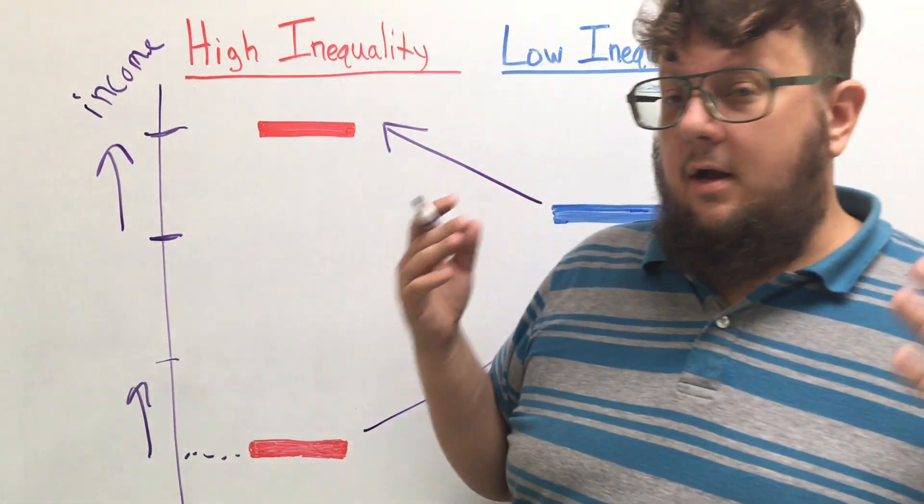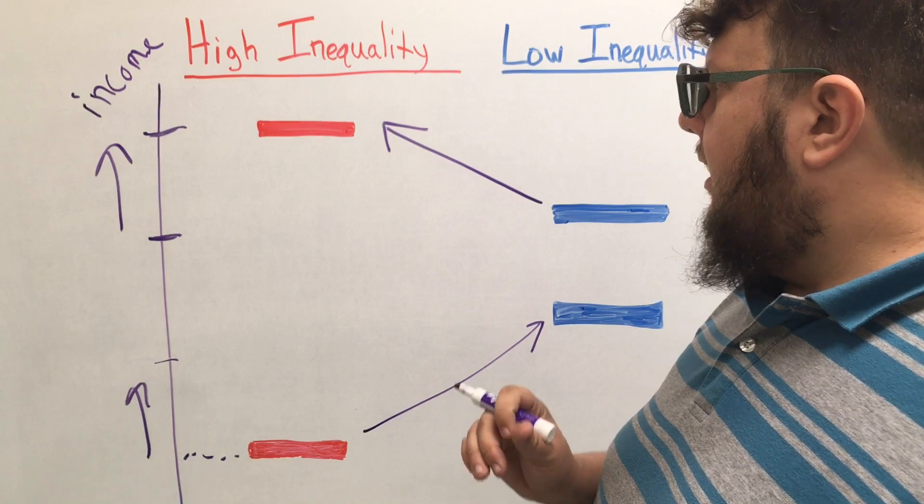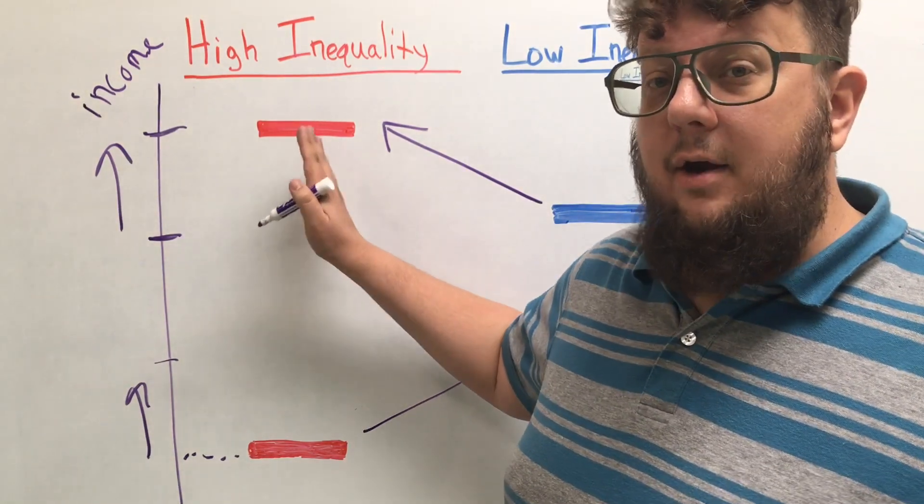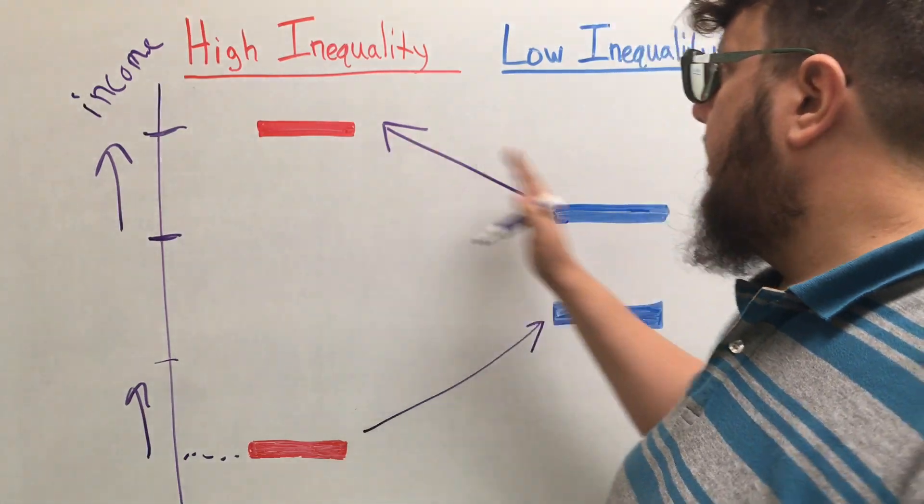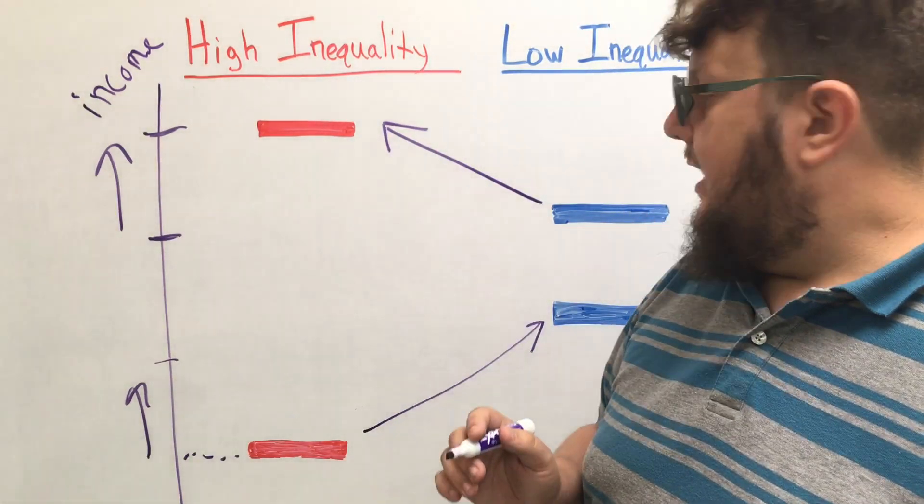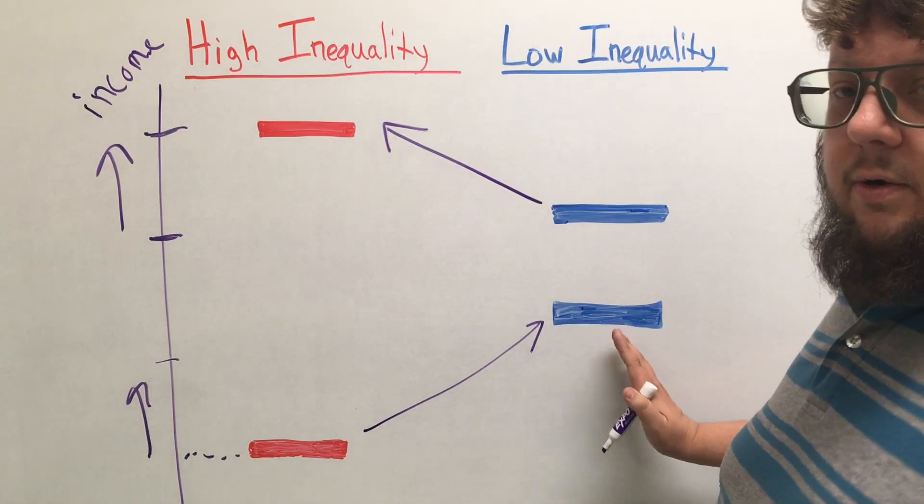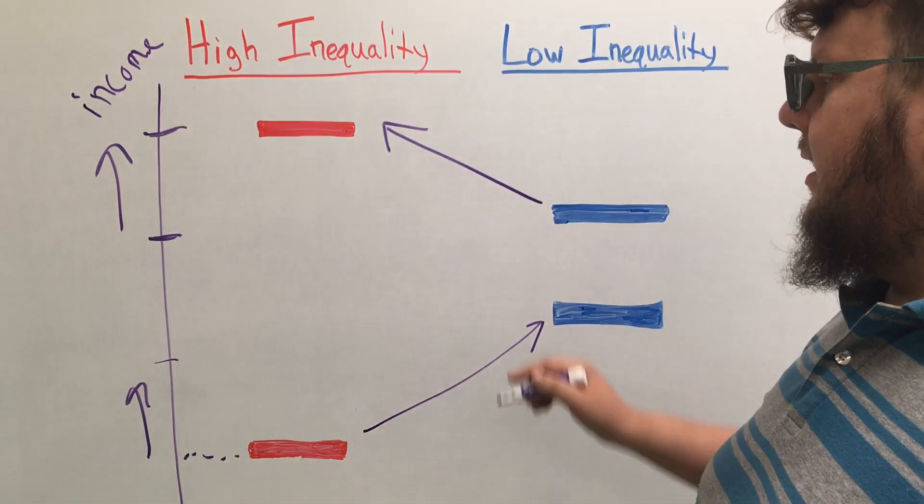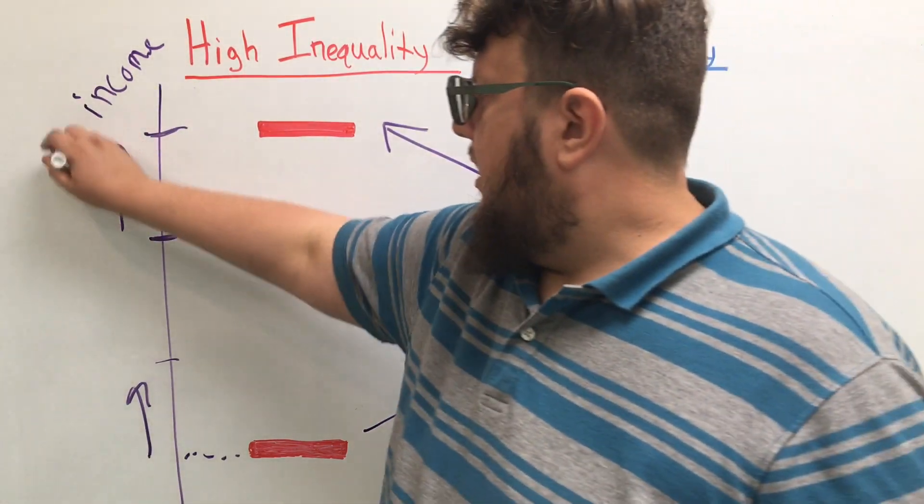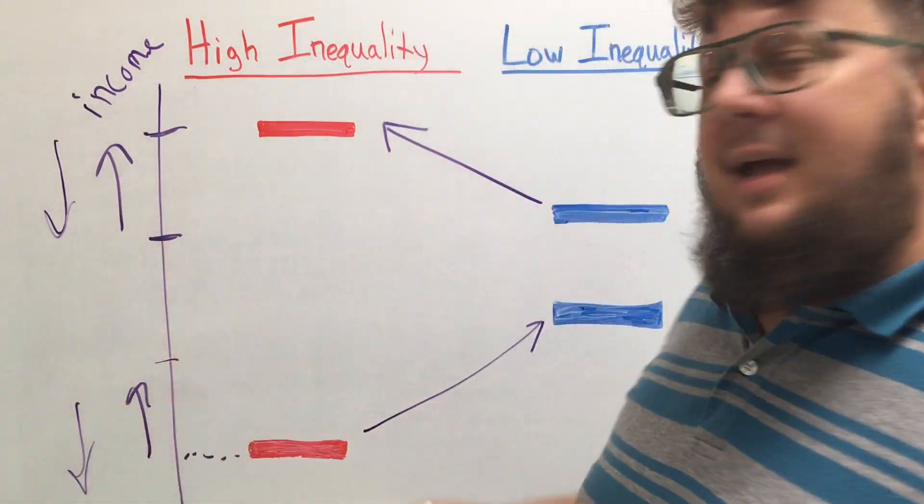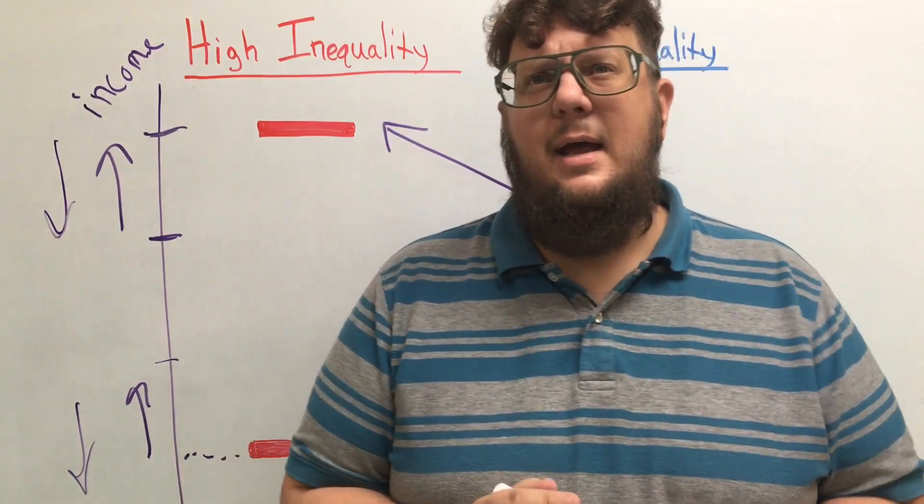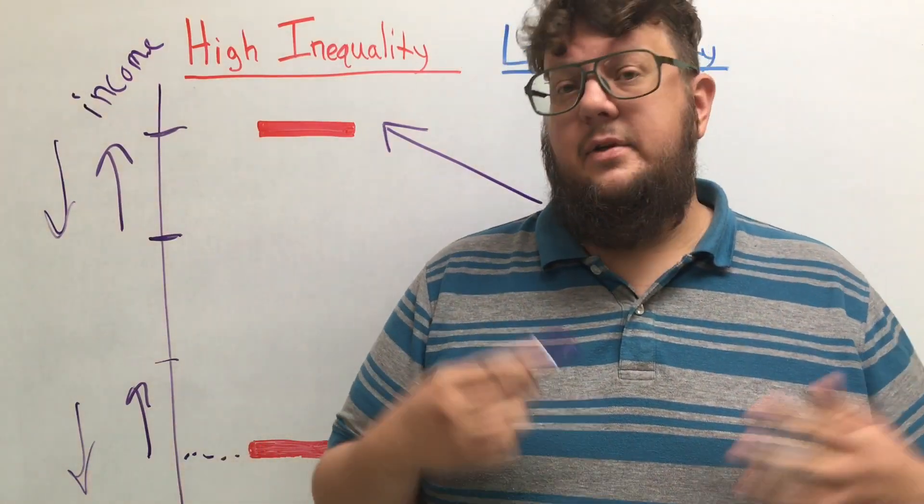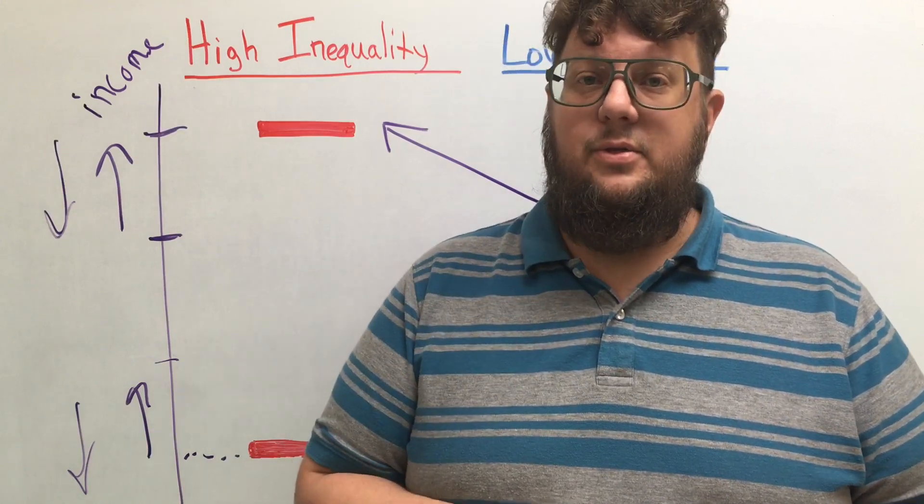Now again, immigration is a very complicated subject, but it would be unlikely that you would be in a high inequality nation as a high earner and go to a low inequality nation, all things being equal. It would also be unlikely that in a low inequality nation being a low earner, you would go to a high inequality nation, because you would force yourself in both cases to have lower earnings. Again, this is a simplified way to explain a theory and we have to make a lot of assumptions to do it, but in general this holds true.